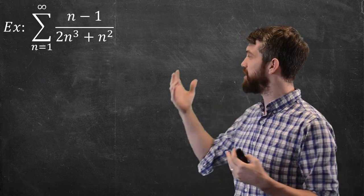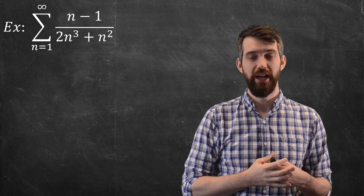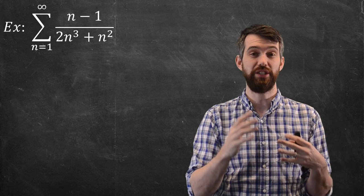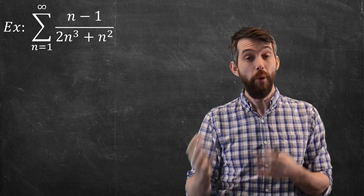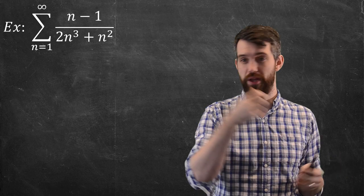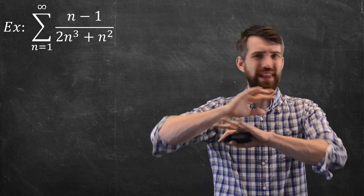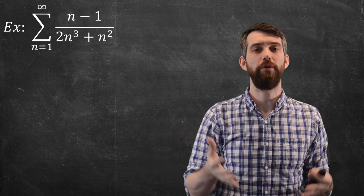Let's see how this applies in a specific example like this one. This is a pretty messy series. We've got N-1 on the top, 2N cubed plus N squared on the bottom. It's not one that I can do by other methods. It's not a geometric series, it's not a P-series. I could try to do an integral test on it, but that looks like a messy integral.